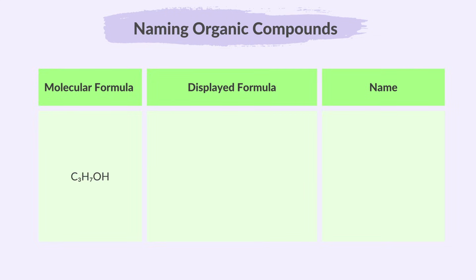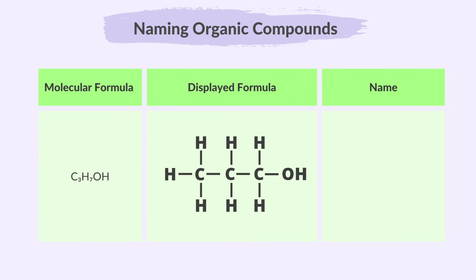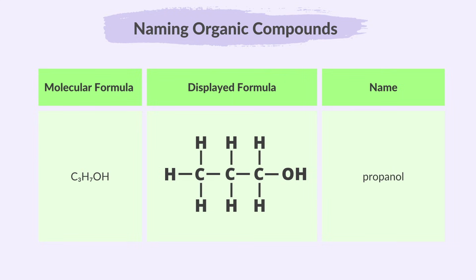Now let's examine the molecular formula C3H7OH and here is its displayed formula. We can see that it has three carbon atoms, which gives it a prefix of prop in its name. Since it contains an OH group, we know it belongs to the alcohol family, so its name will end with ol. Therefore, the name of this compound is propanol.